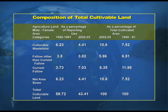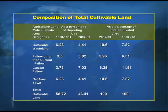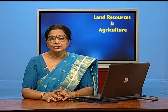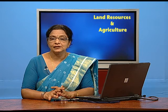On the screen you can see a visual of the composition of the total cultivable land, with all the categories given and a comparison done for different years. If you look at the last column of the table — the percentage of total cultivated area for 1960-61 and 2002-03 — you can see how much change has occurred. Under the culturable wasteland, there is a downward trend in the percentage of area, which is a good sign for a country like India where we have a shortage of land for agriculture.